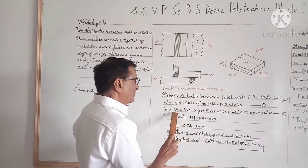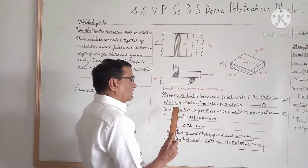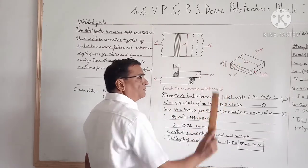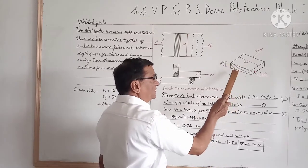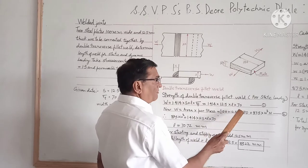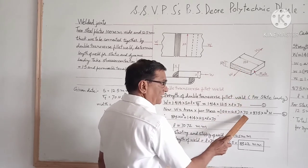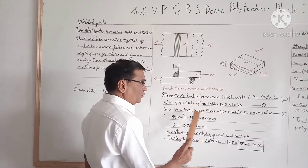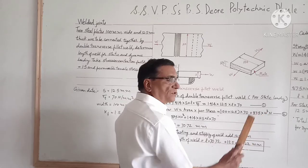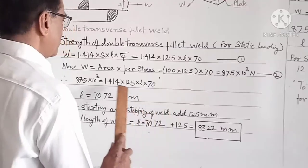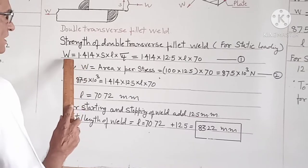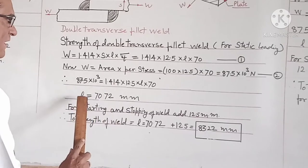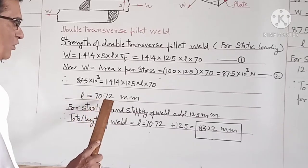The maximum load taken up by the weld or by the plate is determined by the area of the plate multiplied by the permissible stresses. The area of the plate is 100 into 12.5, multiplied by sigma T equal to 70. So the maximum load taken up by this plate comes out to be 87.5 into 10 raised to 3 N. Putting the value of W in equation 1, we find L comes out to be 70.72 mm.